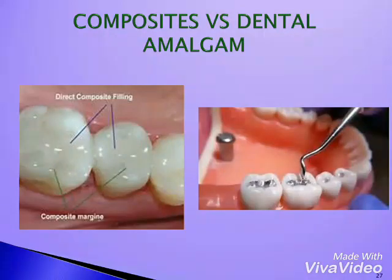Studies have shown that composite restorations do not last as long as amalgam restorations. A study done in 1987 compared the survival rate of both amalgam and dental composite over periods of 3, 4, 5, and 7 years. It was found that after 7 years, 94.5% of amalgam restorations survived, while only 67.4% of composite restorations survived.